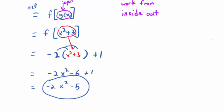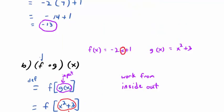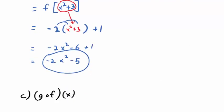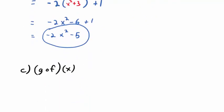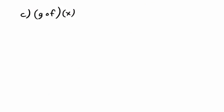What we're saying is this: the new function, when you compose these two functions f and g and you make the input x — just a generic x — it creates a new function. The new function formula, f composed with g, is negative 2x squared minus 5. Now, do you think f composed with g is going to be the same as g composed with f? Your instincts say no — let's see if you're right.